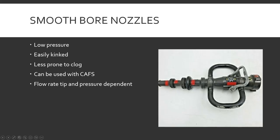Flow rate on smoothbore nozzles is tip and pressure dependent. Different tips — inch-and-three-quarter, inch-and-a-half, inch size — can be stacked. The more tips you stack on, you may get more reach but may get less volume because you're forcing water out of a smaller hole. And pressure dependent — obviously the more pressure you put behind it, the more reach and flow you can probably get.